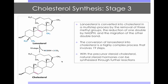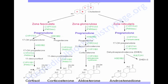With the precursor steroid cholesterol, natural steroid hormones can be synthesized through further reactions. Here is an example of the synthesis of various adrenal steroid hormones from cholesterol. There are four pathways that produce four different hormones. Cortisol is a glucocorticoid that increases blood sugar through gluconeogenesis. Corticosterone has functions in regulating fuel and stress responses throughout the body. Aldosterone is a mineralocorticoid that regulates blood pressure at the level of the kidneys.